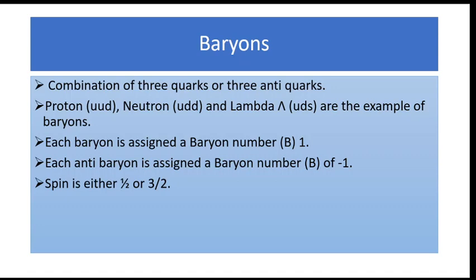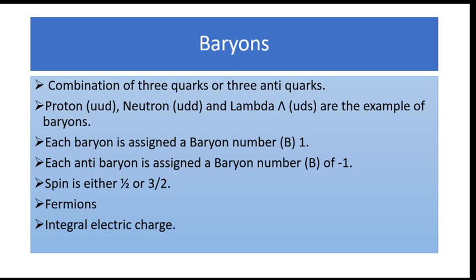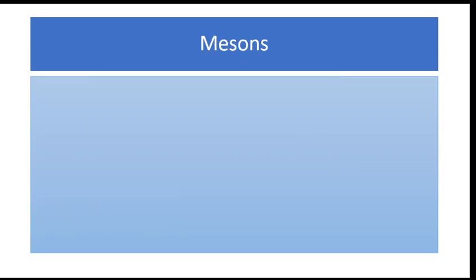Since baryons are combinations of three quarks or three anti-quarks, their spin is either 1/2 or 3/2 according to quantum rules of spin addition. Due to this half-integral spin, all baryons are fermions. Their electric charge is an integral multiple — either zero, ±1, or ±2 times the charge of an electron.